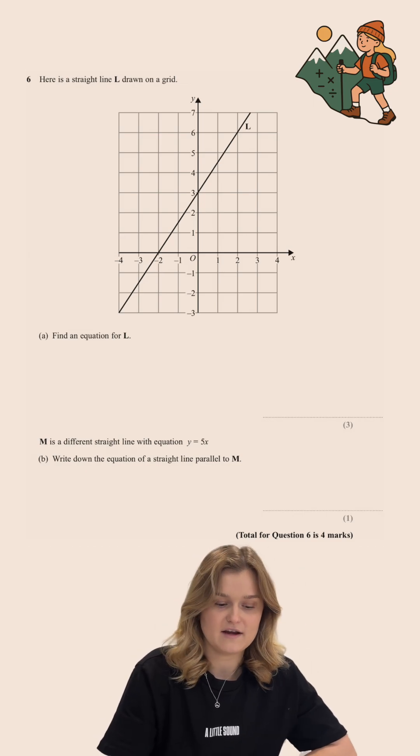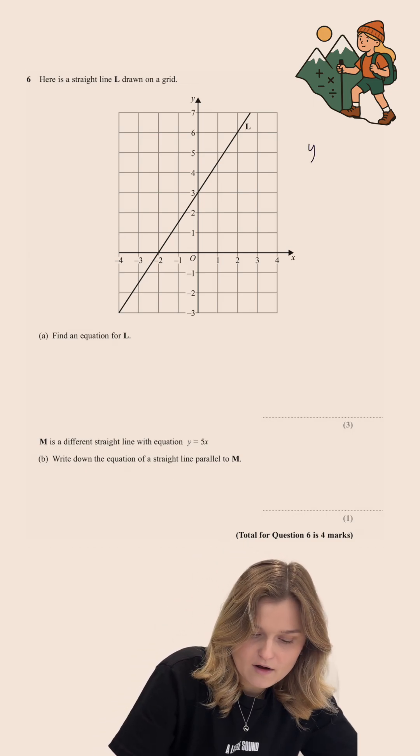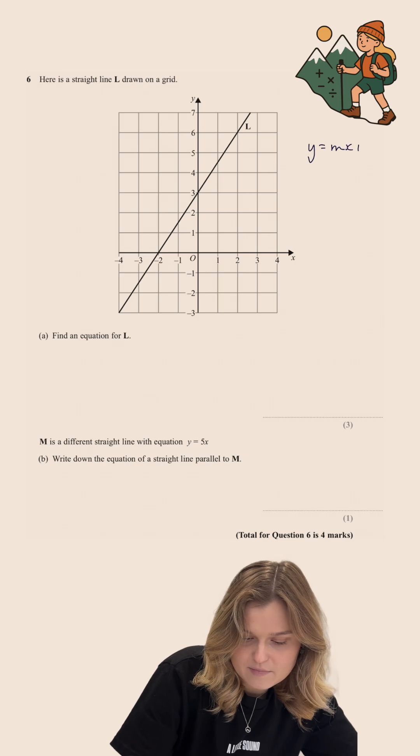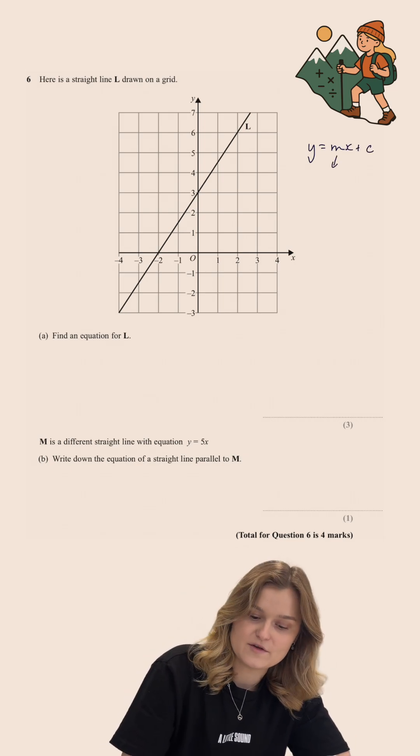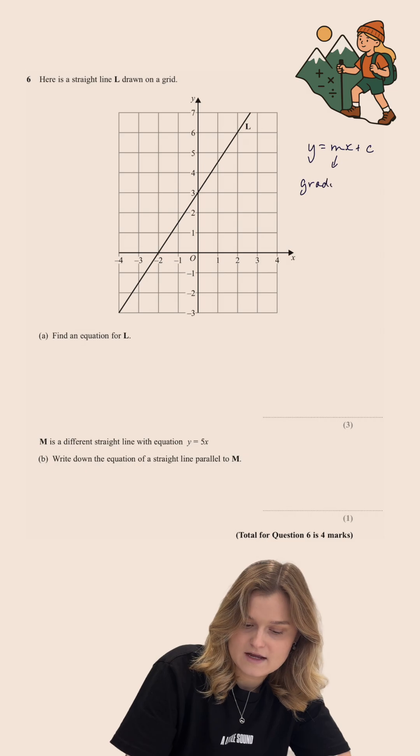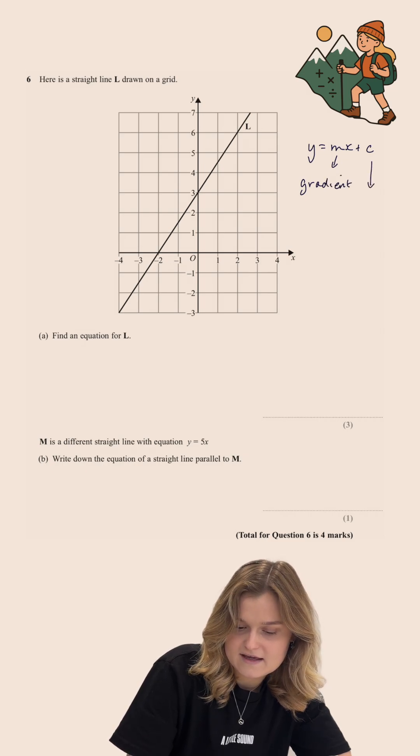Now, the equation of any straight line is always in the form Y equals MX plus C, where M is always the gradient of the line, and C is always the Y-intercept of the line.